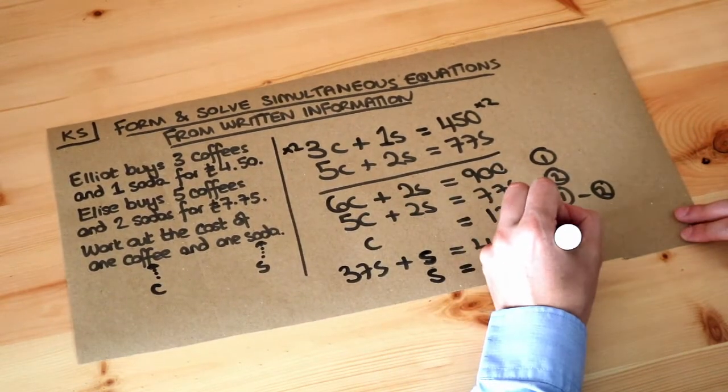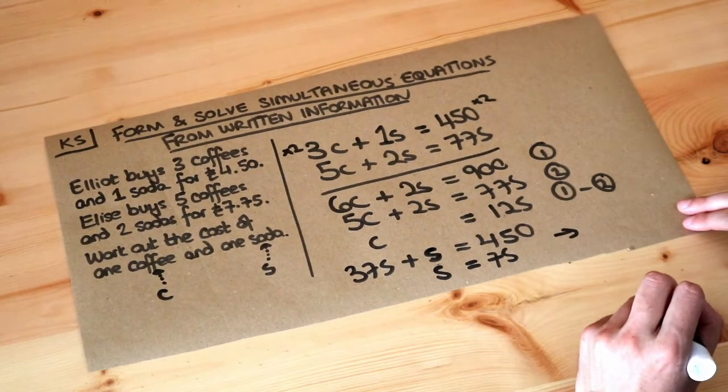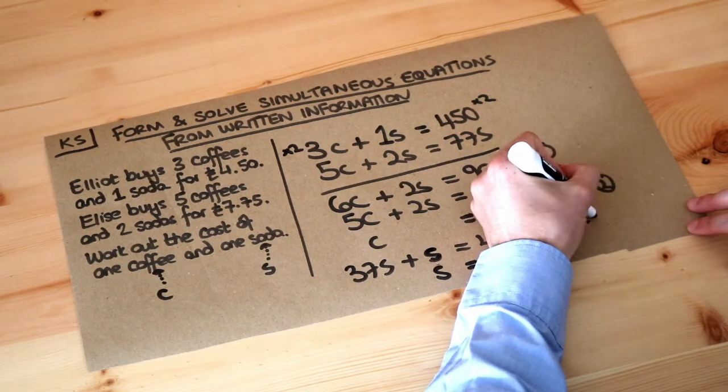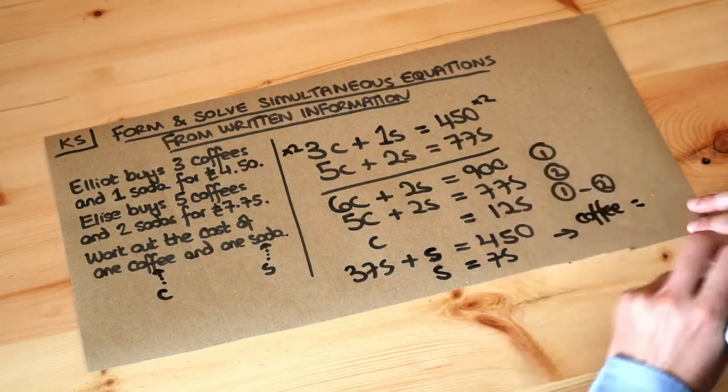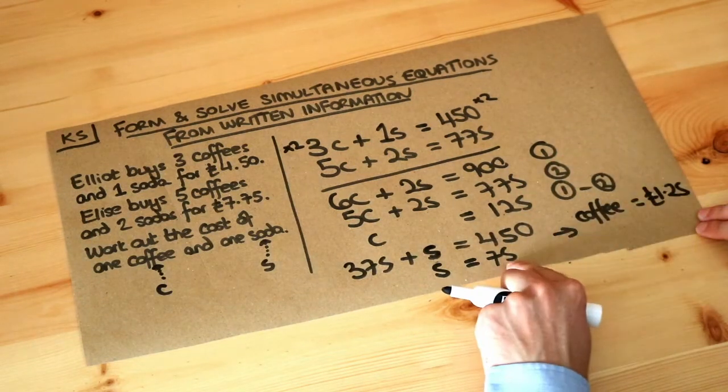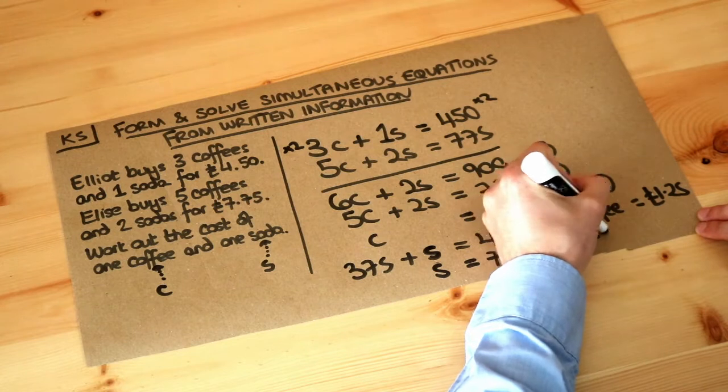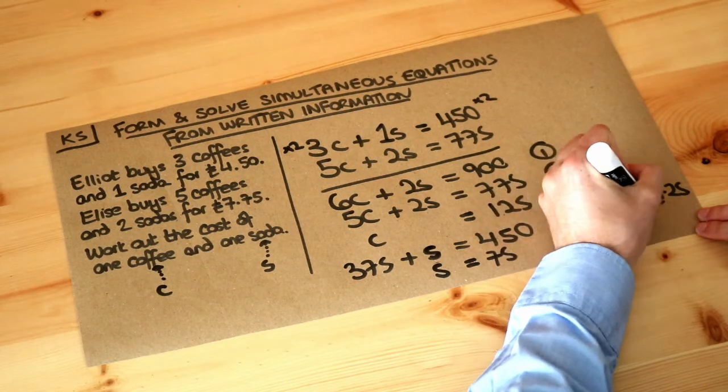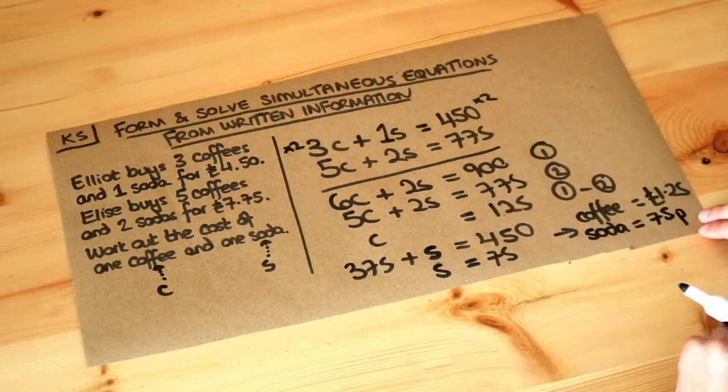Let's put this in a clear format. A coffee costs 125 pence, which is £1.25, and a soda costs 75 pence. That is the final answer.